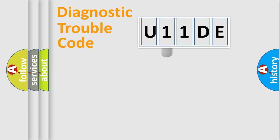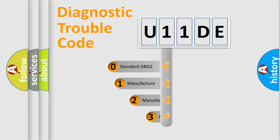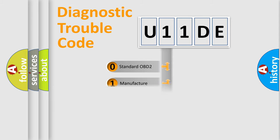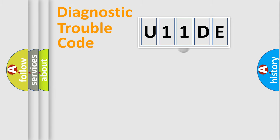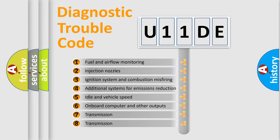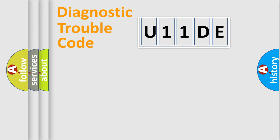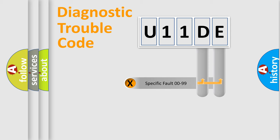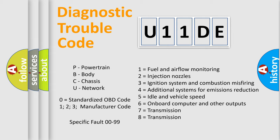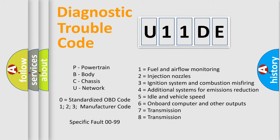This distribution is defined in the first character of the code. If the second character is expressed as zero, it is a standardized error. In the case of numbers 1, 2, or 3, it is a manufacturer-specific error. The third character specifies a subset of errors. The distribution shown is valid only for the standardized DTC code. Only the last two characters define the specific fault of the group. Note that such a division is valid only if the second character code is expressed by the number zero.